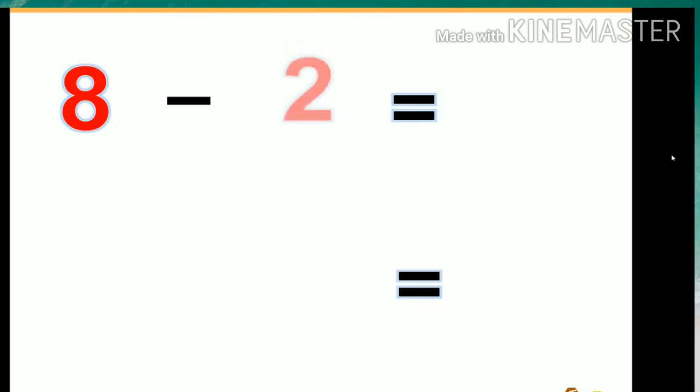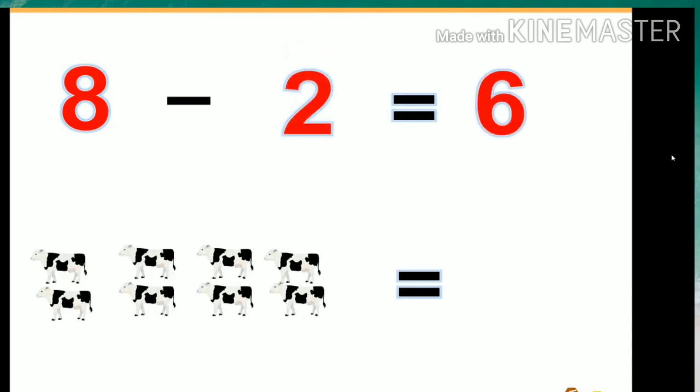8 minus 2 equals 6. If we have eight cows and we take away two cows, there are only six cows left.